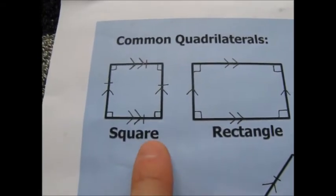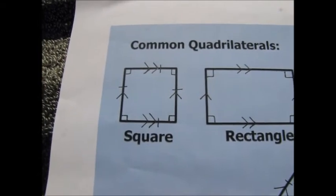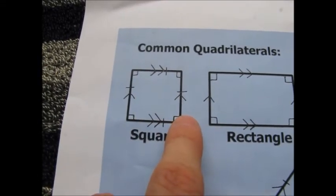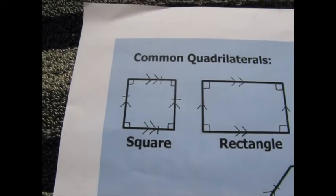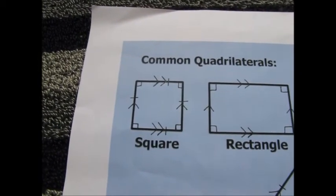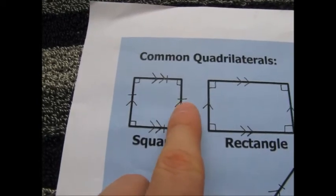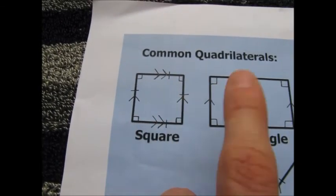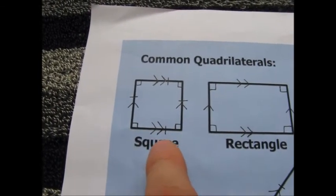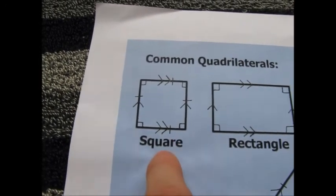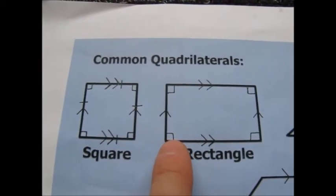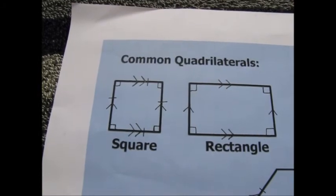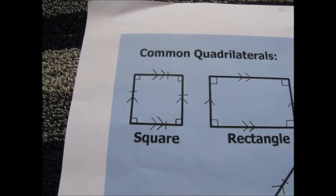A square is also a parallelogram because it has two pairs of parallel sides, and it has four right angles just like a rectangle. What makes it different from a rectangle is that all four sides are equal, shown by the dashes. But a square is indeed a rectangle too, since it has four right angles and two pairs of parallel sides — which blew my mind when I found that out.